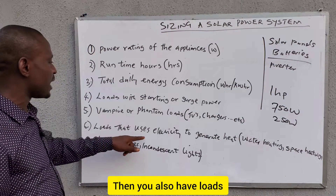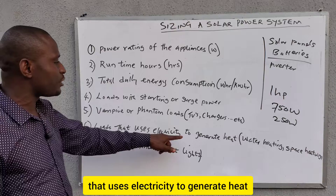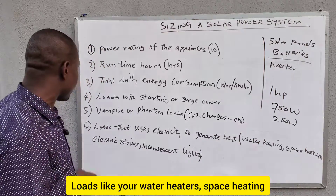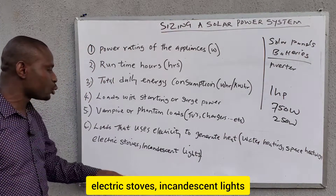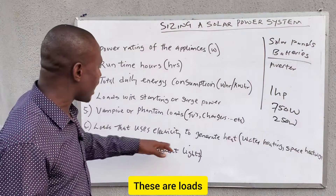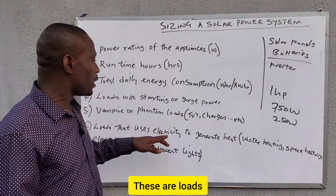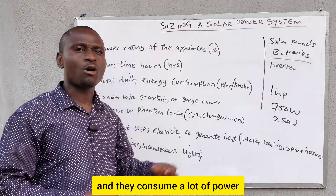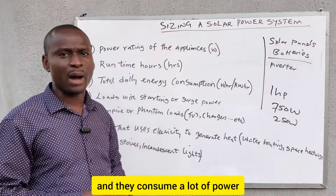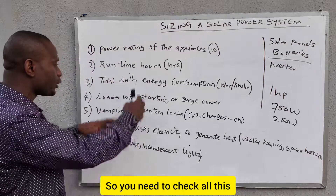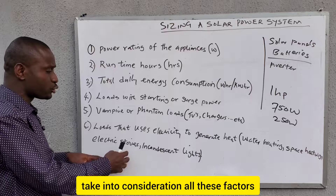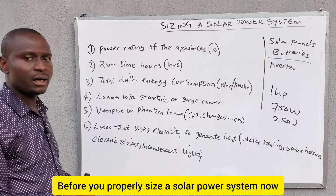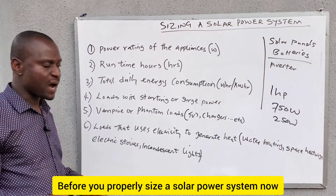You also have loads that use electricity to generate heat — loads like water heaters, space heating, electric stoves, and incandescent lights. These are loads that use electricity to generate heat and they consume a lot of power. You need to take all of these factors into consideration before you properly size a solar power system.